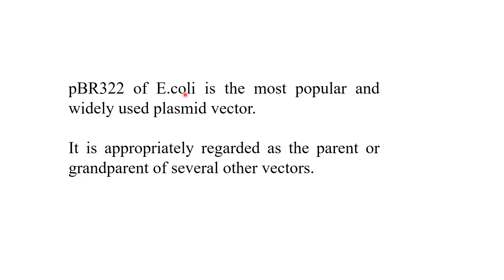pBR322 is an E. coli vector that was produced using ColE1. It is the most popular and widely used plasmid vector. pBR322 is appropriately regarded as the parent or grandparent of several other vectors, as many other vectors were synthesized by modifying and eco-modifying this original vector.